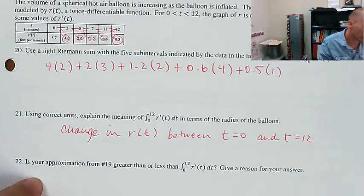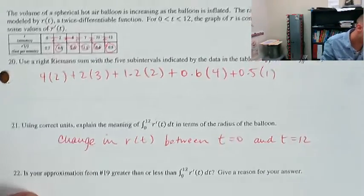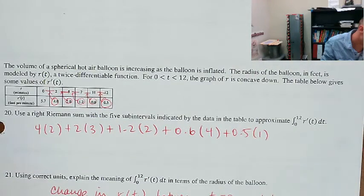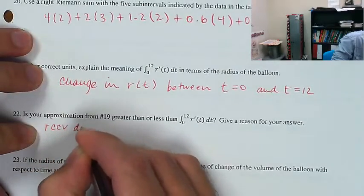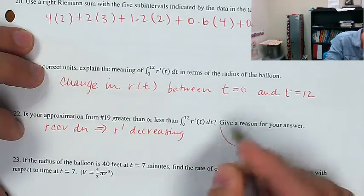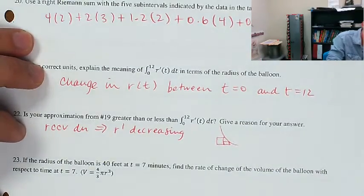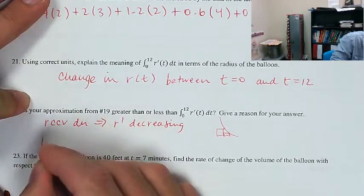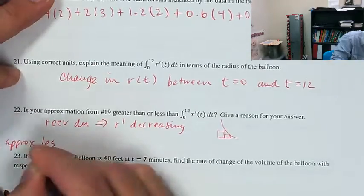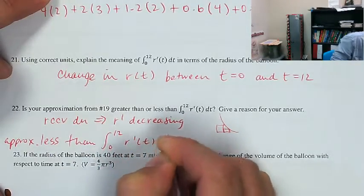Is the approximation from the previous problem greater than or less than the true value? I used a right Riemann sum on a function. R is concave down, which implies R′ is decreasing. Since we had a decreasing function and a right Riemann sum, it's going to be an underestimate. So the approximation is less than the integral from 0 to 12 of R′(t) dt.